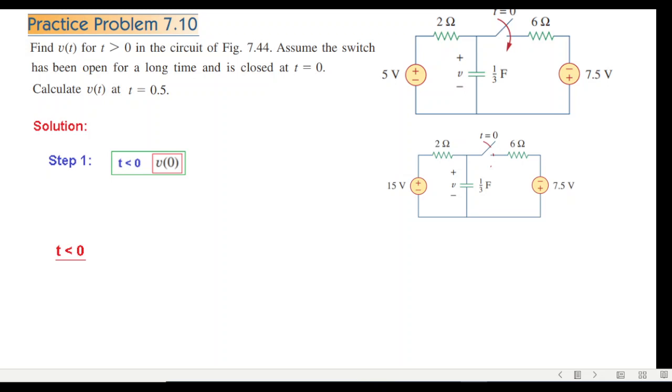V(t) at t less than zero is equal to zero. Actually the voltage - I could neglect this portion of the circuit. So at t less than zero, the capacitor is fully charged with the input voltage, which is 15 volts. So v(0) equals 15 volts - that's the answer from step number one.